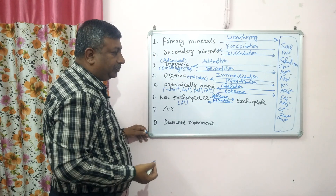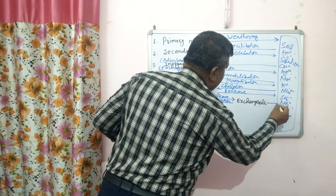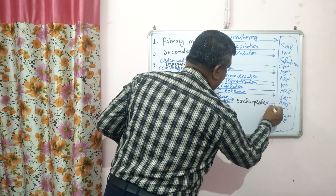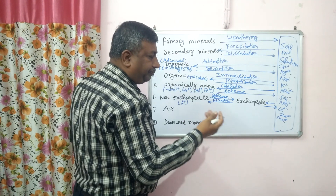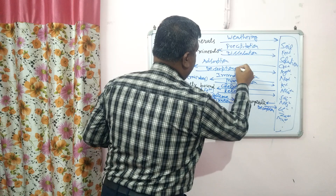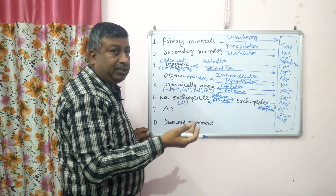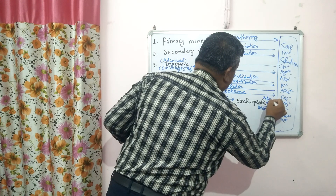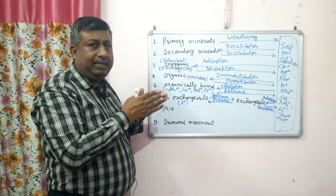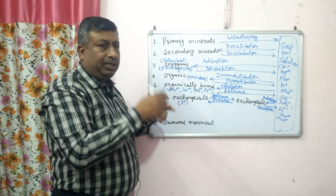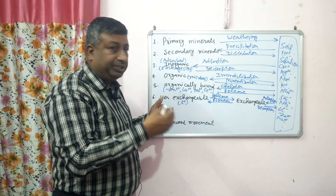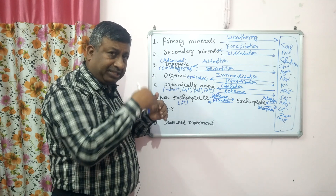The exchange between exchangeable form and soil solution also occurs. When the soil solution form comes into the exchangeable form, that is adsorption. When the exchangeable form comes into the soil solution, that is known as desorption. So adsorption and desorption for inorganic forms work the same way. First, potassium is present in the interclay layer — not available to the plant, that is non-exchangeable form. It is released to exchangeable form by the release process, and from exchangeable form it enters soil solution by desorption. From soil solution onto the exchange site is adsorption.